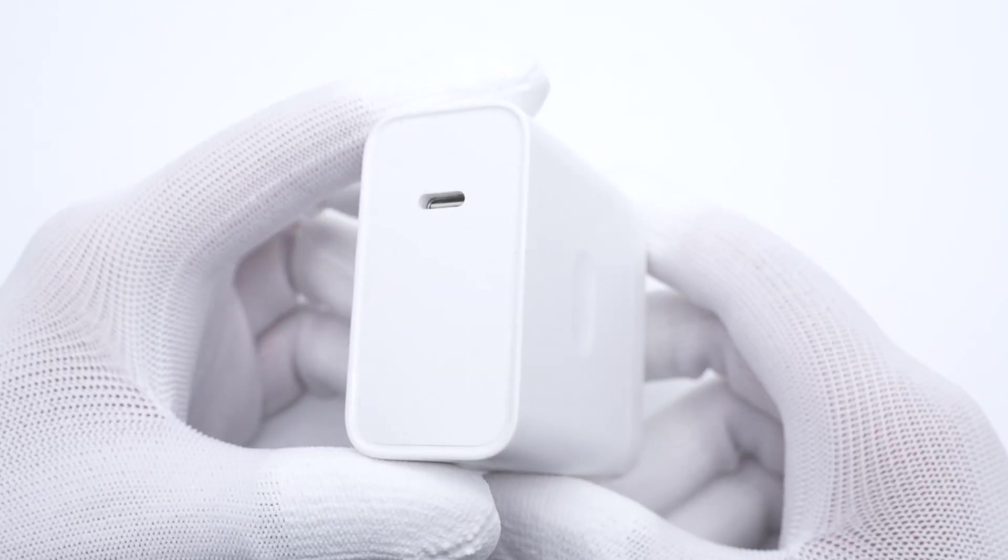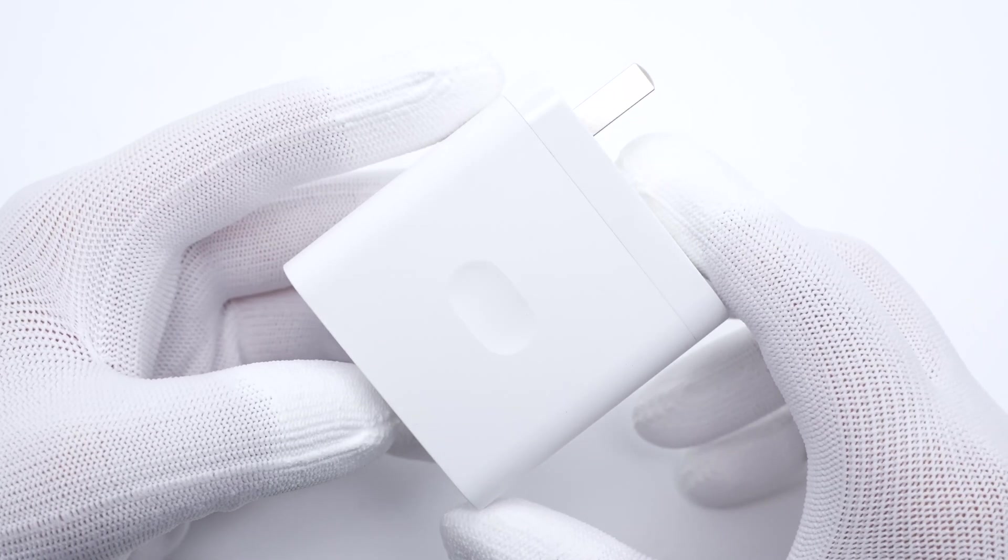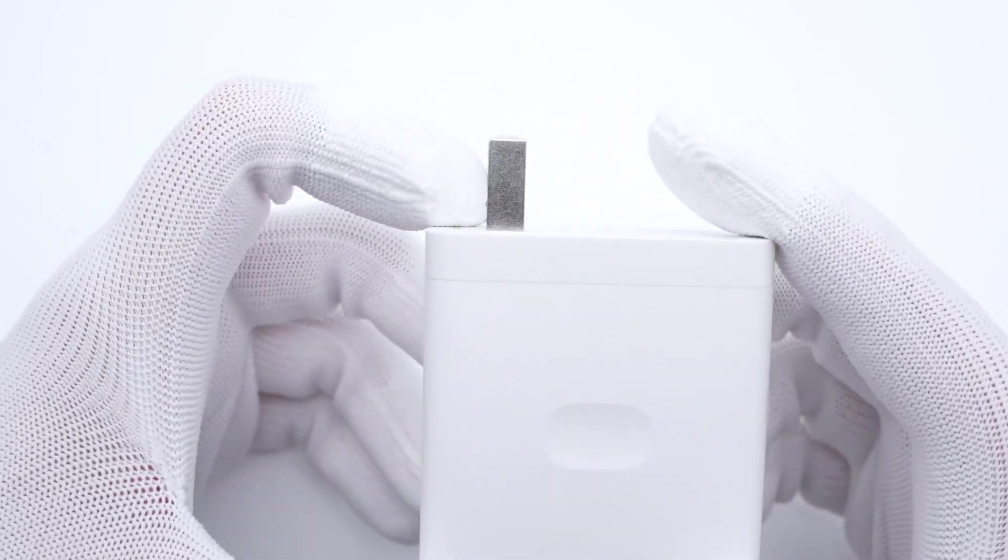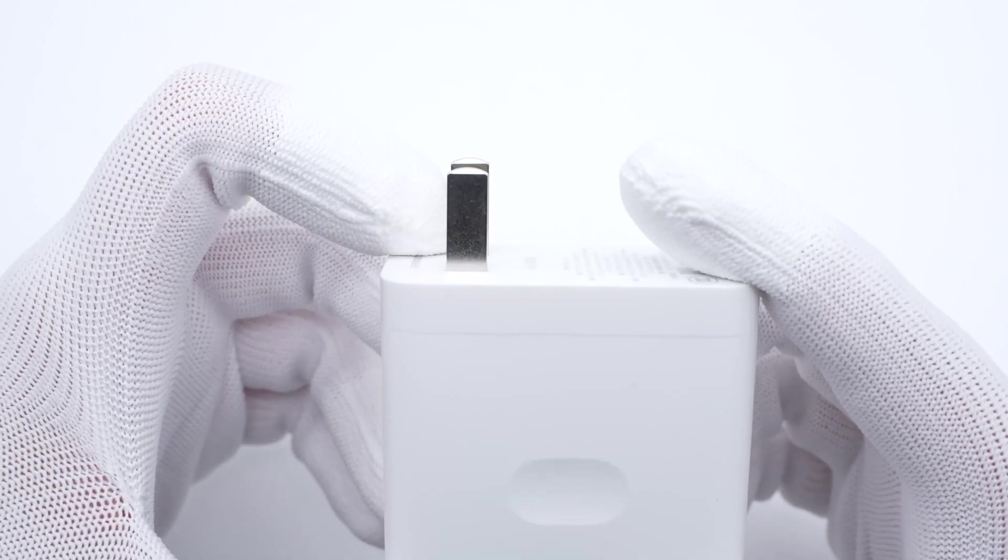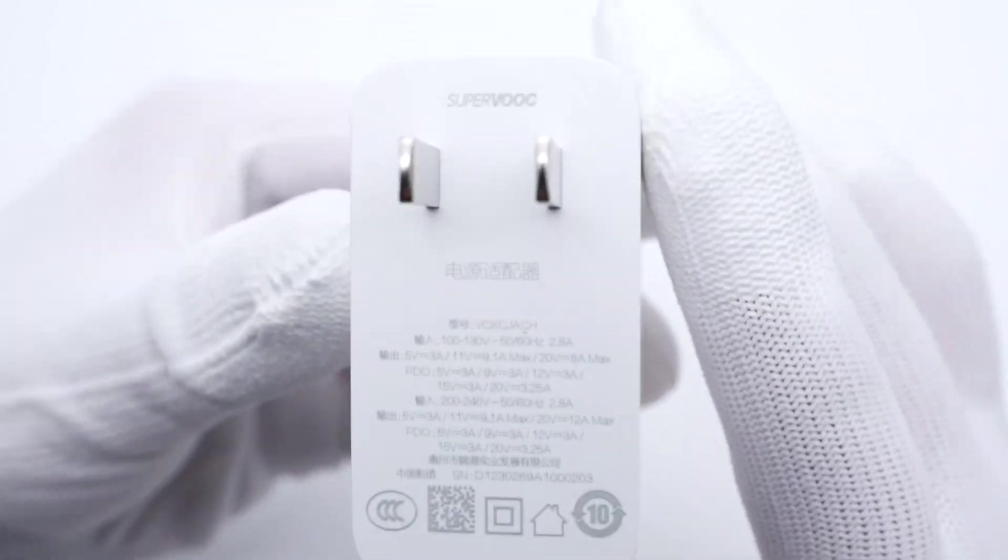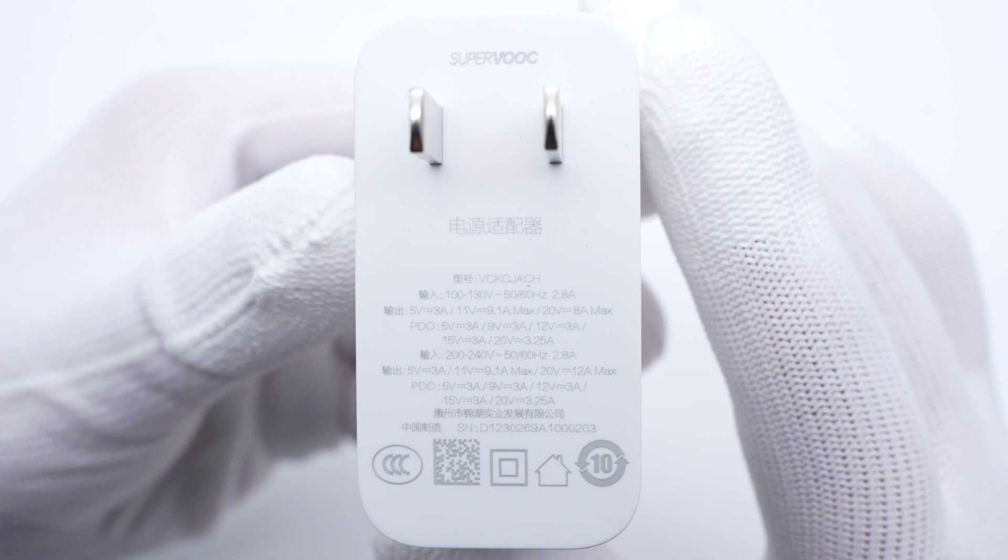This charger adopts a pure white matte surface. Like Apple 35W charger, the slight hollows can facilitate the user to hold it more tightly. Two input prongs cannot be folded. And let's briefly introduce the specs info.